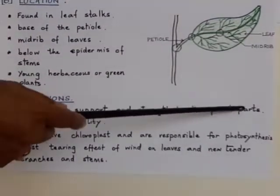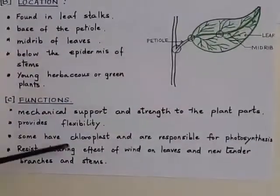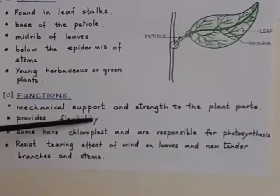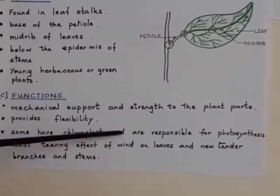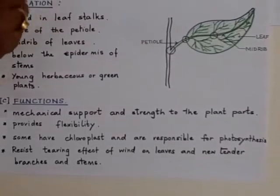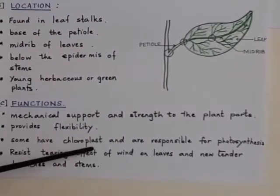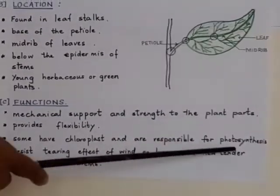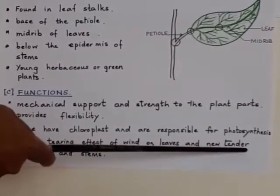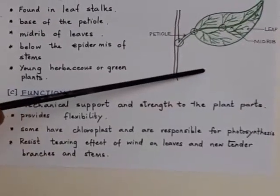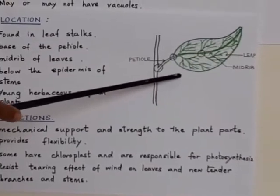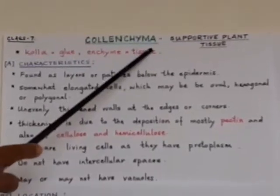The functions of colenchyma are: they provide mechanical support and strength to plant parts. They also provide flexibility — when there is a storm, the plant keeps fluttering but won't break. Some colenchyma cells have chloroplasts and are responsible for photosynthesis. They also resist the tearing effect of wind on leaves and new tender branches and stems. In fact, if you try to tear out a small coriander plant, you will see strings coming out — those strings are of colenchyma cells.